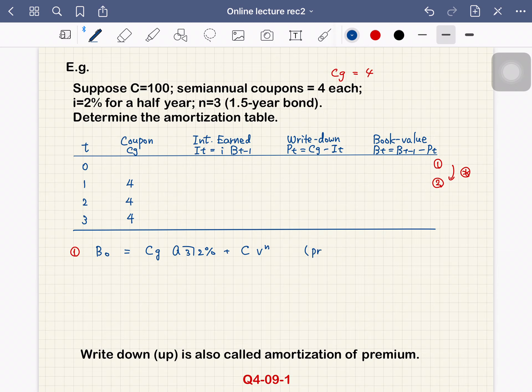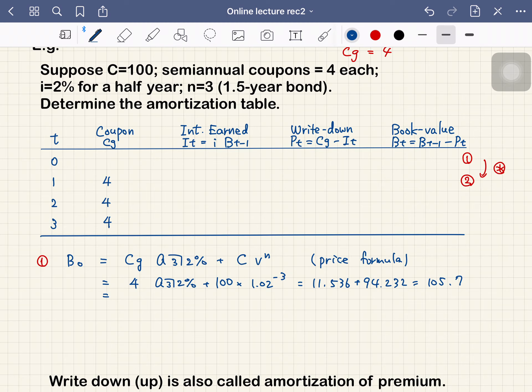This becomes 11.536 plus 94.232, which equals 105.77, approximately 105.76. This is B0. You can plug in this as 105.76.